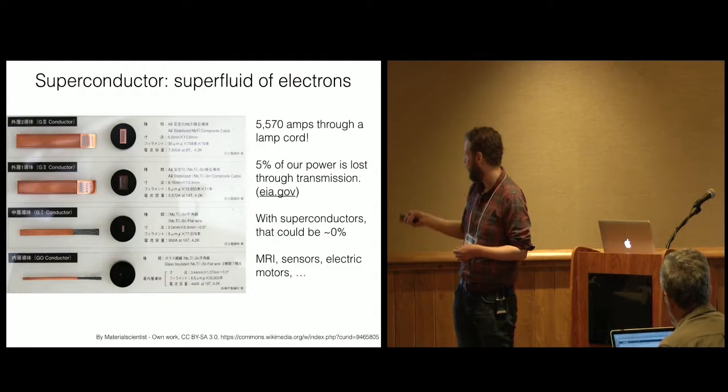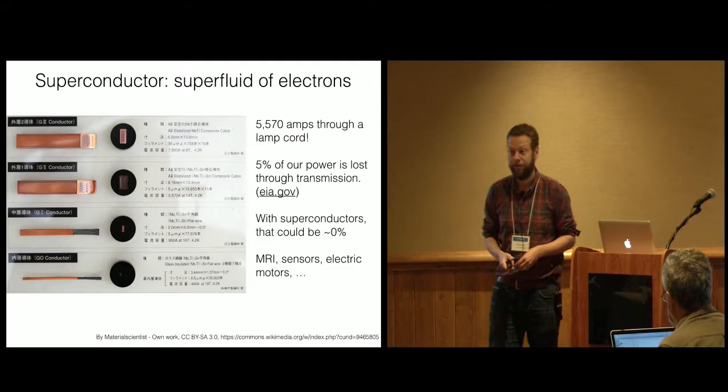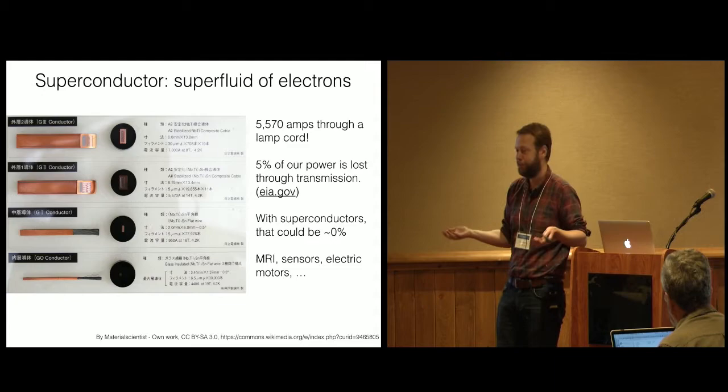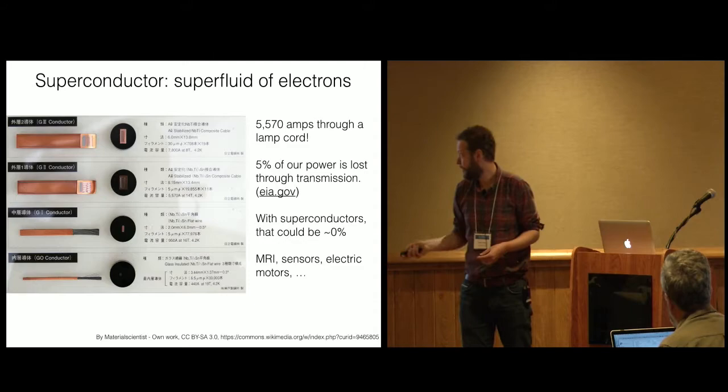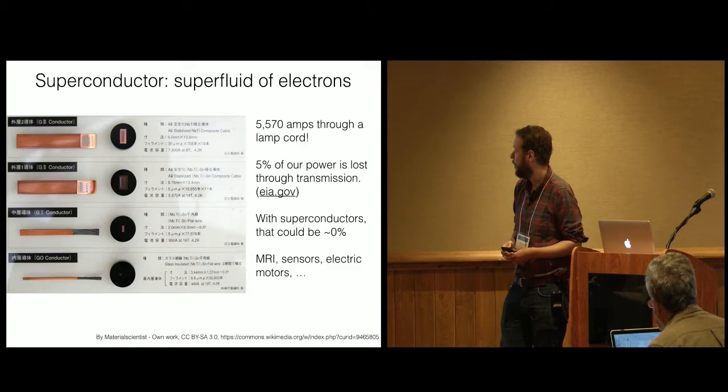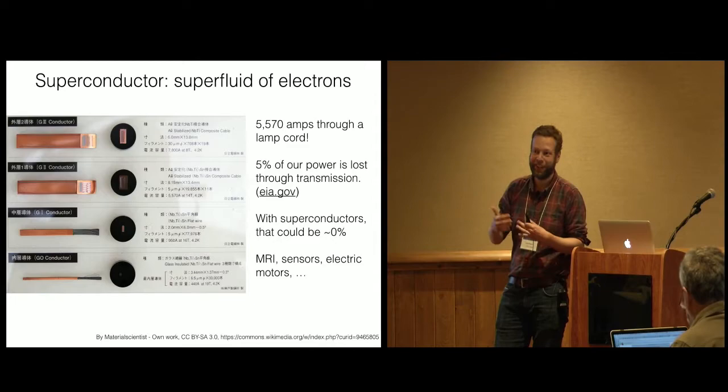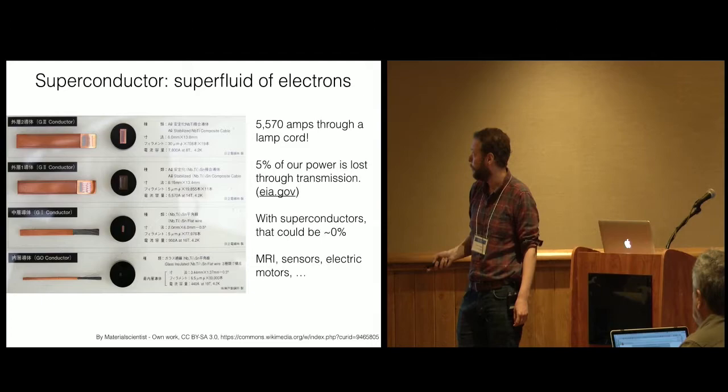And actually, if you look out, the EIA in our government keeps track of these things, how much power we lose through just the power lines. And about 5% of our power is lost through transmission. That's it. It's just gone because it goes through our lines. If we made these out of superconductors and somehow could get them to be 10 Kelvin, that could be zero. That could be nothing. This kind of technology, this kind of material is also used in things like MRI to make the big magnetic fields. Sensors. That is referred to just now for quantum computing. Electric motors. You can make electric motors out of this and really improve the efficiency of those things as well if you can get it cold enough, right? Or if you can get the temperature at which you become superconducting high enough, right? One or the other. So that's a good motivation for working on this.